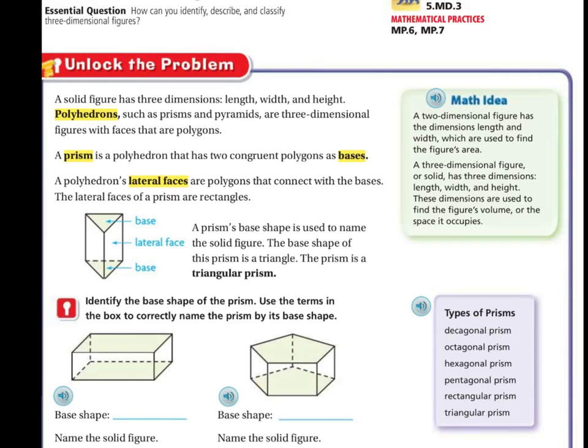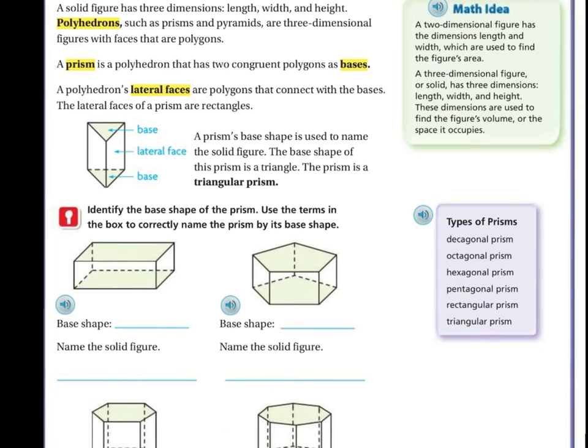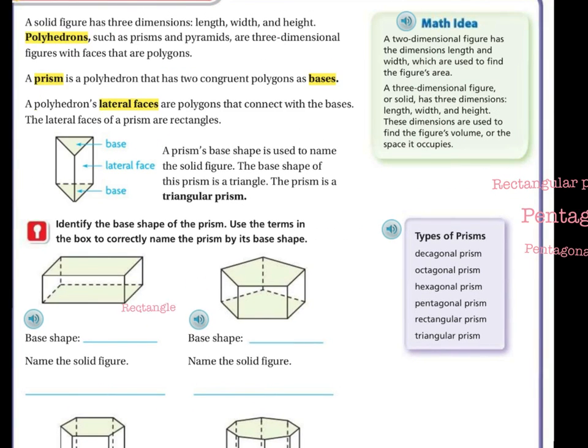Let me lift this up a little bit. So the base shape on this. So again, the base shape is a rectangle. So the name of our solid figure is a rectangular prism.